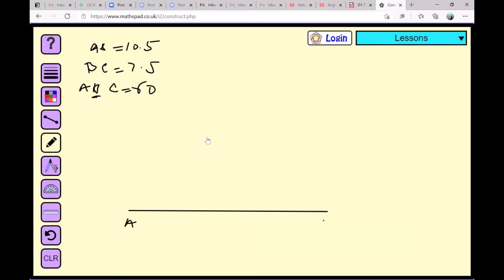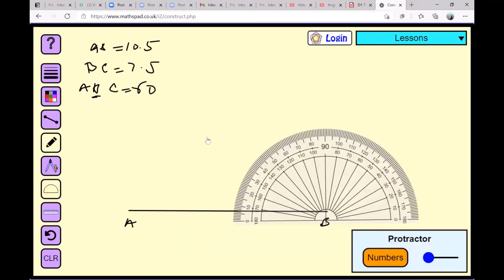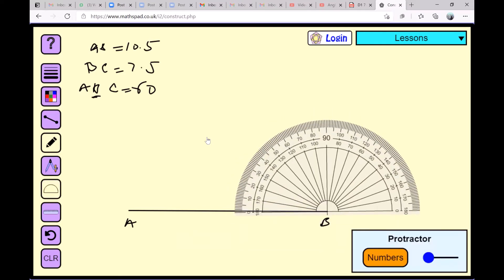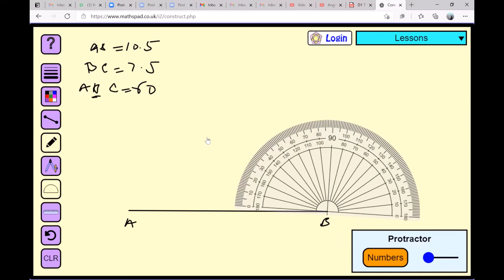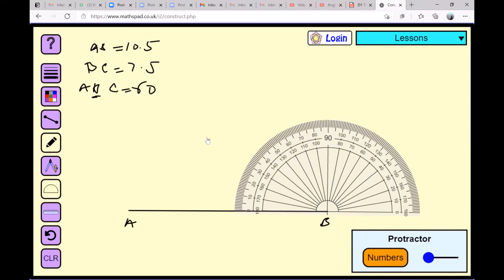At B, so I'll place my protractor on B. Align it properly, and I'll construct an angle of 60 degrees here. 60 degrees is exactly here.